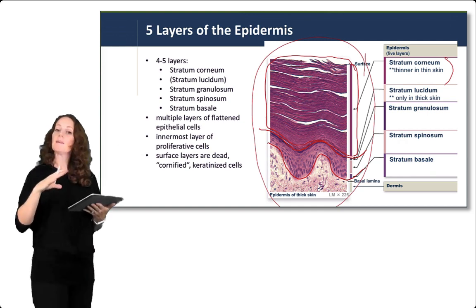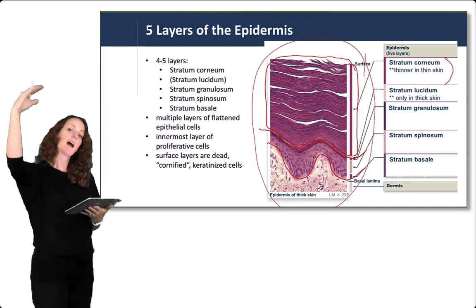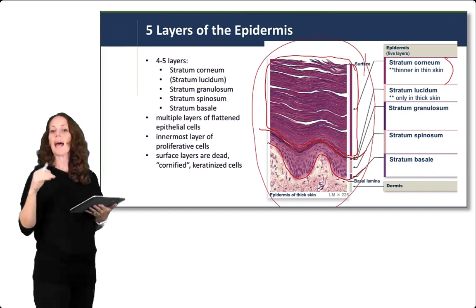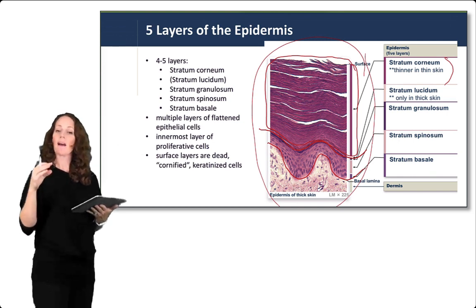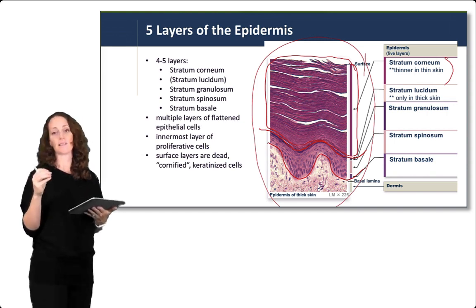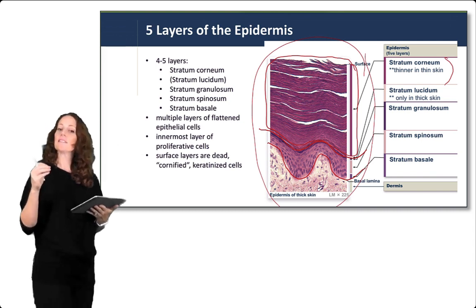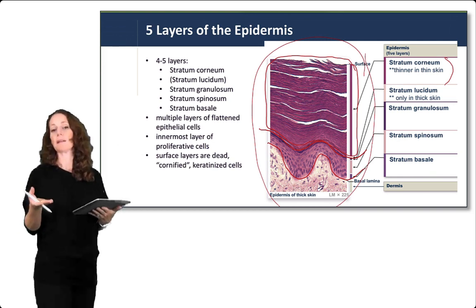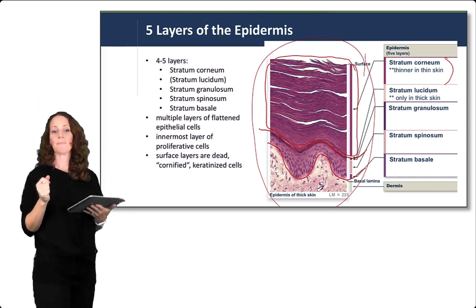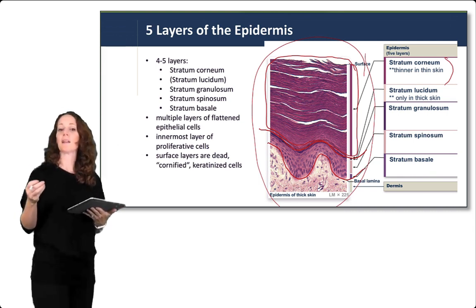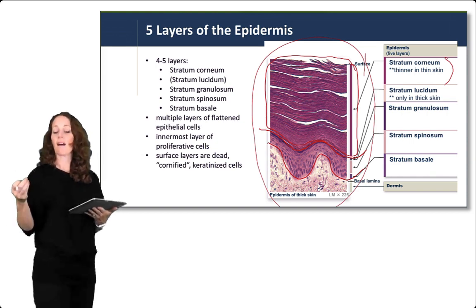The stratum basale produces skin cells that slowly migrate upward toward the stratum corneum over the course of about 30 days. As they migrate into the stratum corneum, they become more and more keratinized — they start to lose their organelles and become dead skin cells by the time they reach the very top layer. The surface layers of the skin are dead, cornified, or keratinized cells. This is important when learning about skin cancers, as certain portions of the epidermis give rise to different types of skin cancers, with some cell types being more proliferative and more likely to become cancerous.